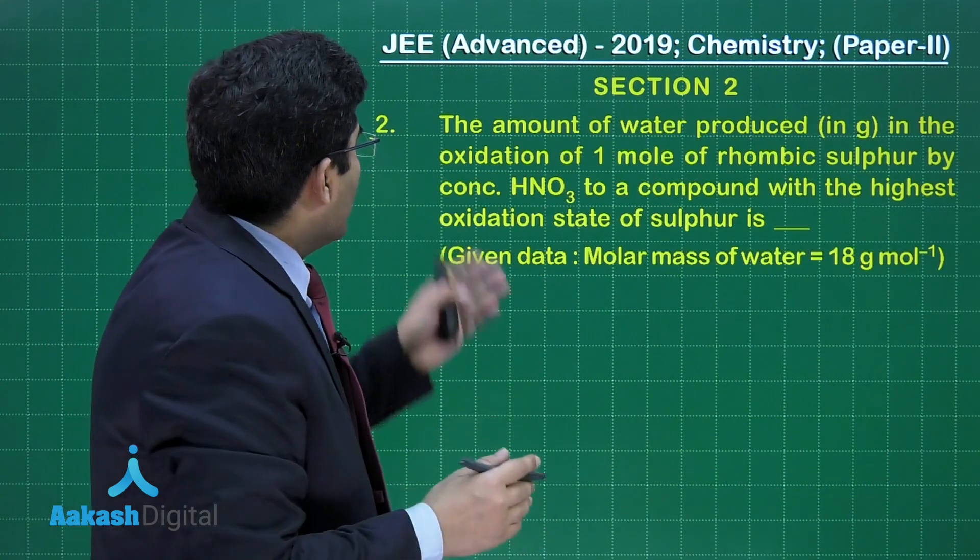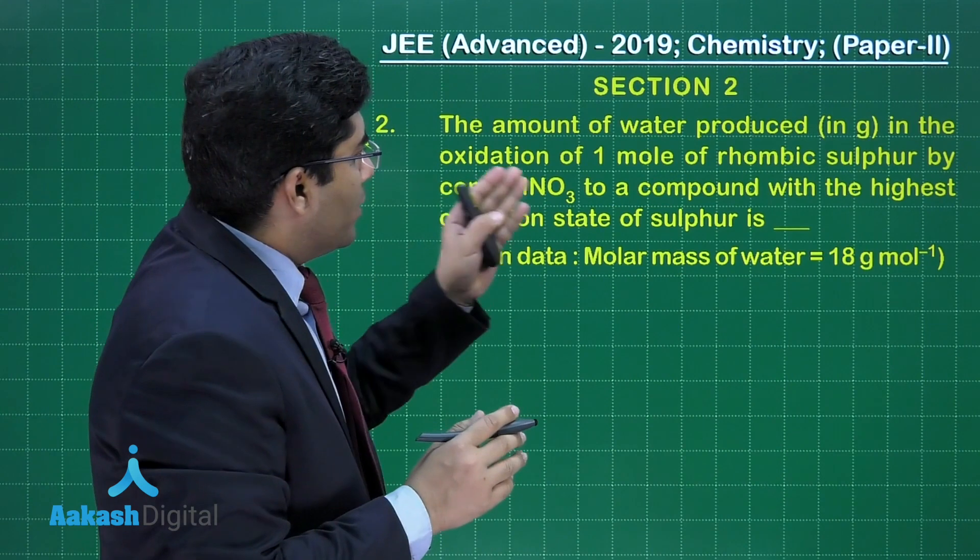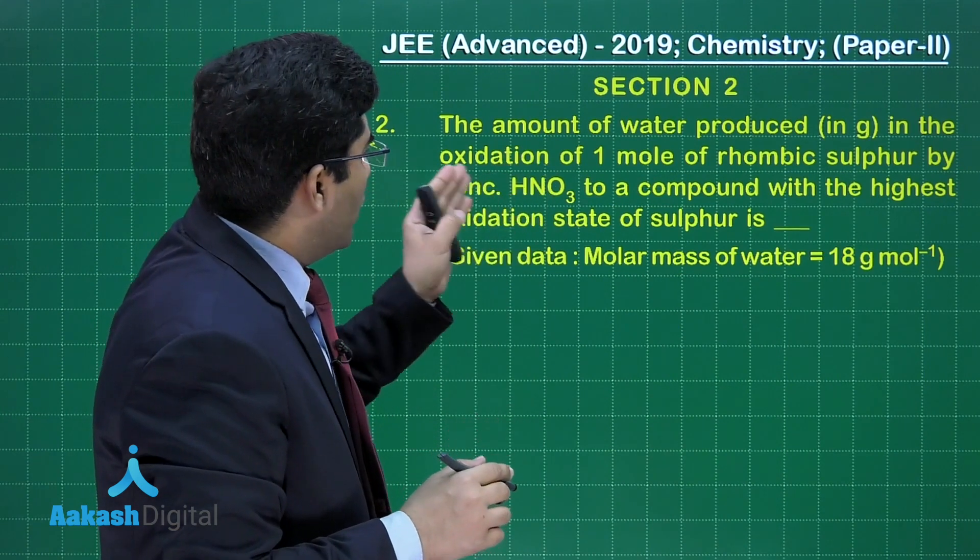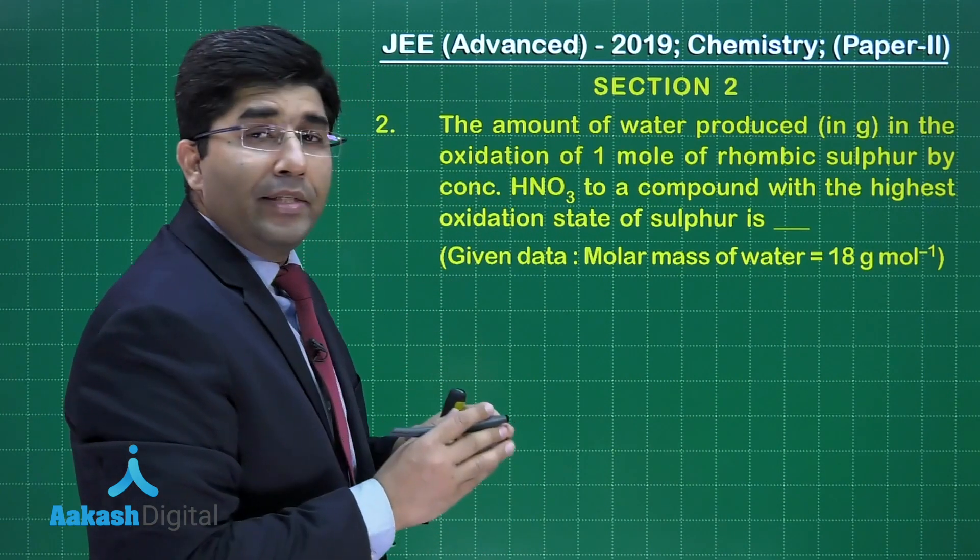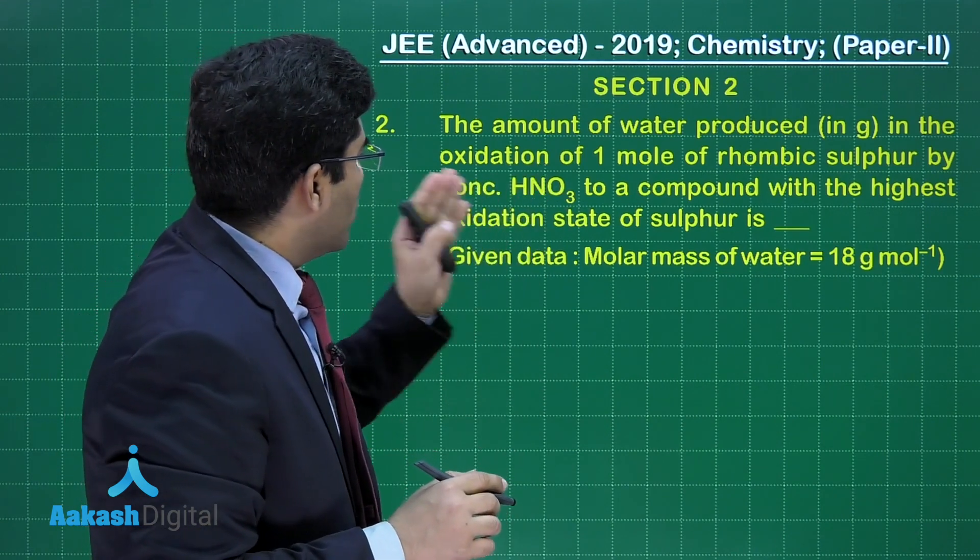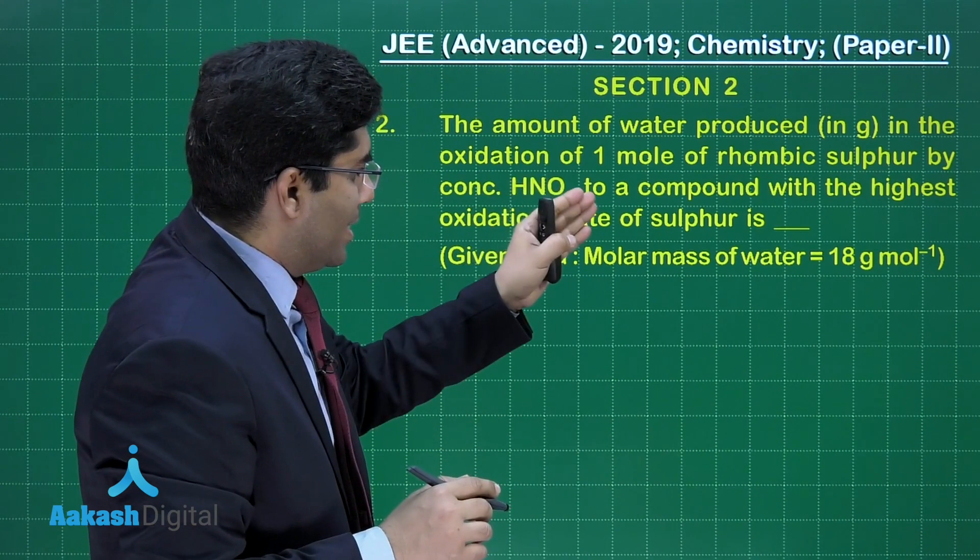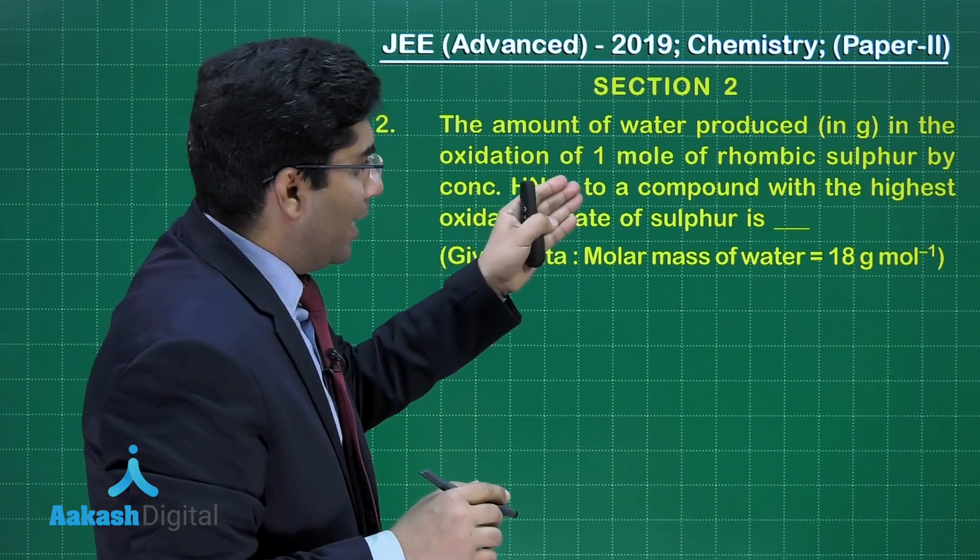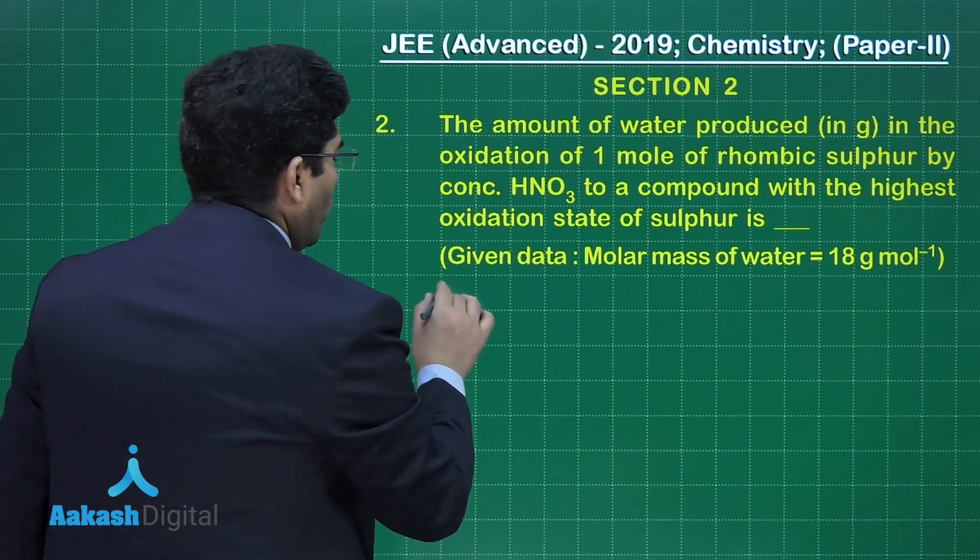Now, in this question, it's asking the amount of water produced in grams in the oxidation of 1 mole of rhombic sulfur by concentrated HNO₃ to a compound with the highest oxidation state of sulfur. So, we have to fill that blank. Let us start the solution.